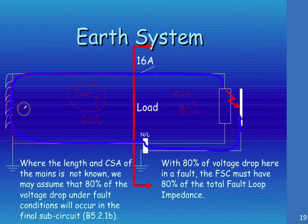So the Z at the transformer and the Z on their cables, both the active and the neutral cable. With that 80% of the voltage drop where we can control the fault, the FSC must have 80% of the total loop impedance.